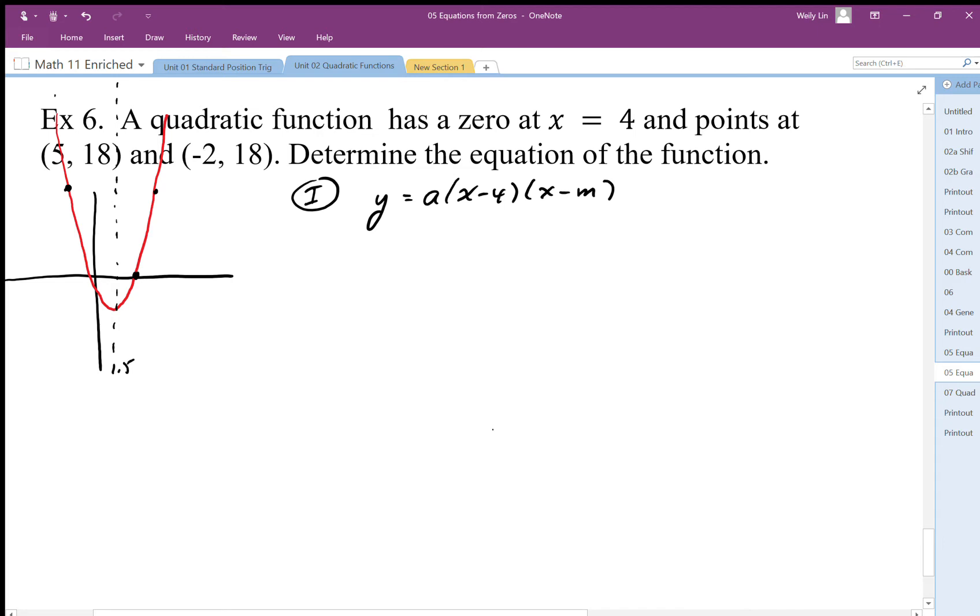We have two points to set up the two equations. I'm going to start with equation one here: y equals 18 when x equals 5. So I input 5 minus m. This simplifies to 18 equals 5a minus am.